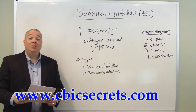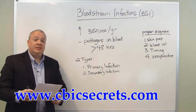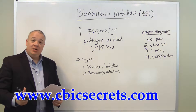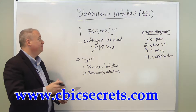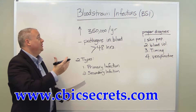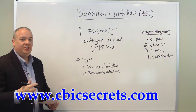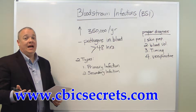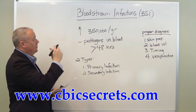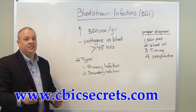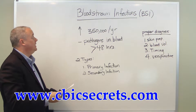We're going to talk for the next few minutes about bloodstream infections, or BSI. Bloodstream infections have been on the rise over the last few decades, with more than 350,000 reported per year. They are defined as pathogens found in the blood of patients who have been in the hospital for more than 48 hours.